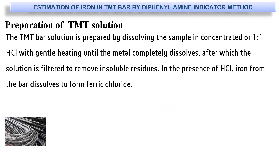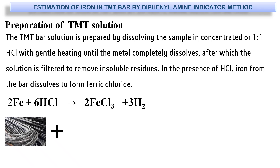So how do we prepare the TMT bar solution? The TMT bar solution is prepared by dissolving the sample in concentrated HCl in a 1:1 ratio with gentle heating until the metal completely dissolves, after which the solution is filtered to remove insoluble residues.